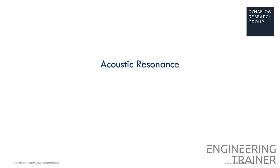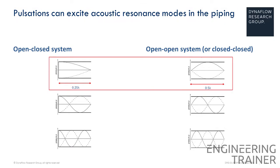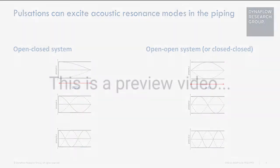First, we'll focus on acoustic resonance in the context of pulsations. Pressure pulsations can excite acoustic resonance modes in piping. Let's approximate a straight pipe segment as a one-dimensional system. We will now distinguish two situations of standing pressure waves in the piping based on the boundary conditions.